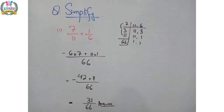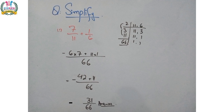The next question is: simplify. Again we take the LCM of both sides. We have denominators 11 and 6, and the LCM of 11 and 6 is 66. We divide and multiply: 66 divided by 11 is 6, multiplied by numerator 7 gives minus 42. Then 66 divided by 6 is 11, multiplied by numerator 1 gives 11. So minus 42 plus 11 gives minus 31 upon 66. This is the final solution.